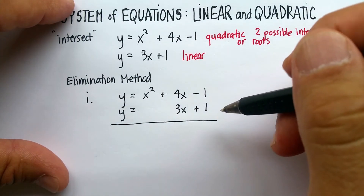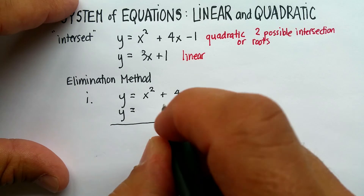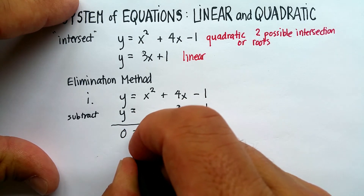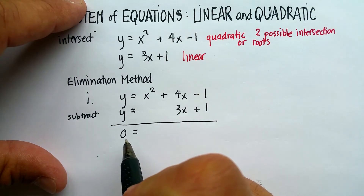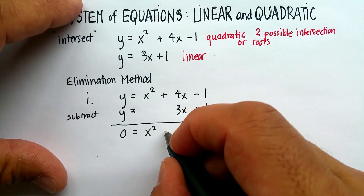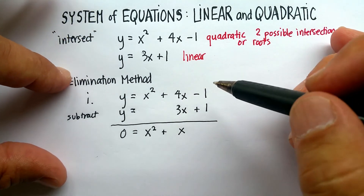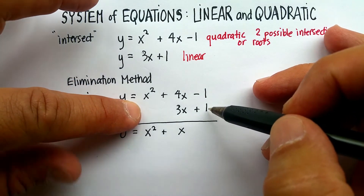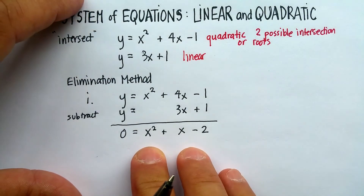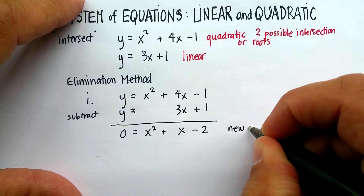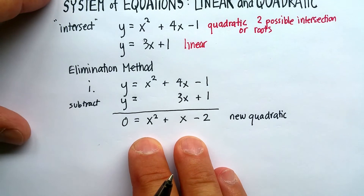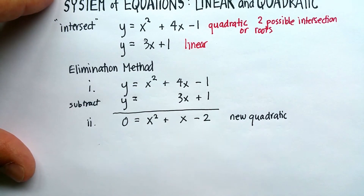Go ahead and eliminate one of the variables — in this case I can eliminate by subtracting. y minus y gives me 0, which is perfect, because you always want to solve a quadratic equation by making it equal to 0. x squared minus nothing is x squared. 4x minus 3x is positive x. And negative 1 minus 1 is minus 2. We end up with a new quadratic equation, and we want to find the solution for it using the quadratic formula.